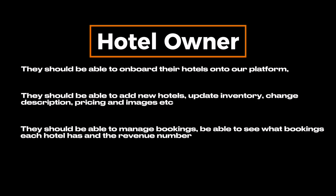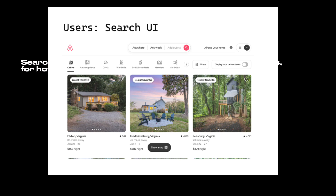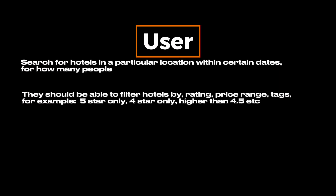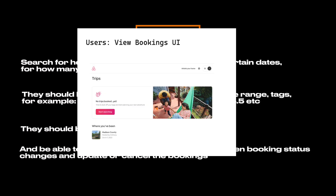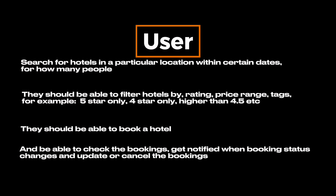They should be able to see the revenue number. From the user's perspective, a user should be able to search for hotels in their particular location within certain dates for how many people. They should be able to filter hotels by rating, price range, and tags — for example, 5-star only hotel, 4-star only hotel, hotels higher than 4.5 stars, etc. They should be able to book a hotel and be able to check their bookings, get notified when the booking status changes, and update or cancel the bookings.